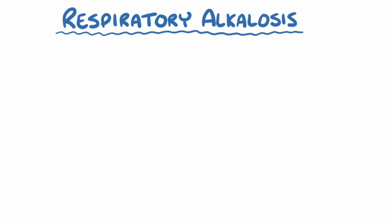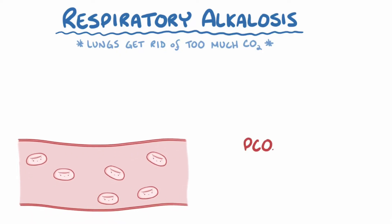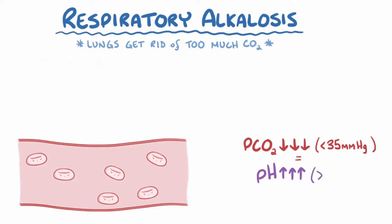In all of these situations, the result is that the lungs get rid of too much carbon dioxide. The carbon dioxide gets depleted from the blood, so the partial pressure of carbon dioxide falls, usually below 35 mmHg. This causes an increase in blood pH, often raising it above 7.45.